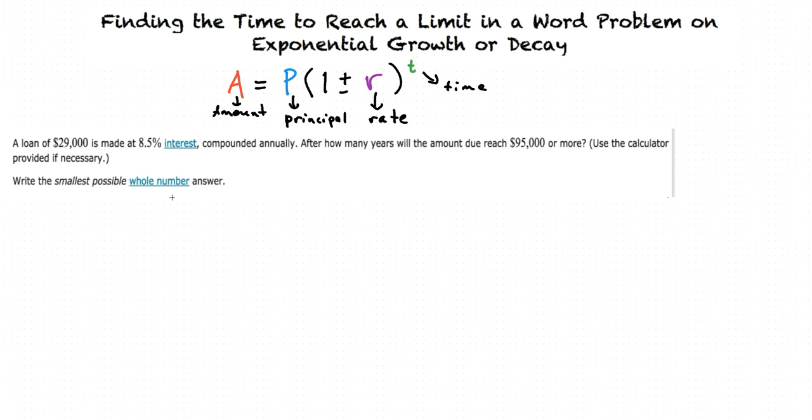In this problem, what is our principal amount? It appears to be $29,000, because that is the starting amount of money. Correct. Then how do we write the rate as a decimal? To convert a percent into a decimal, we move the decimal point to the left two places. Yes, so that makes our rate 0.085.